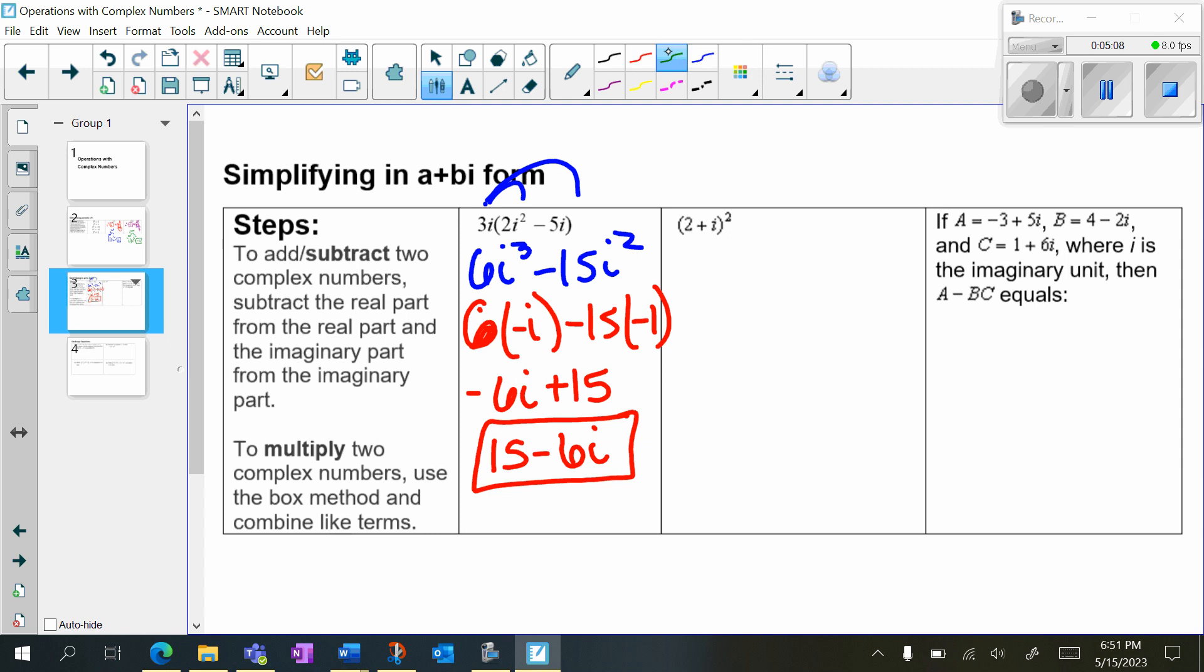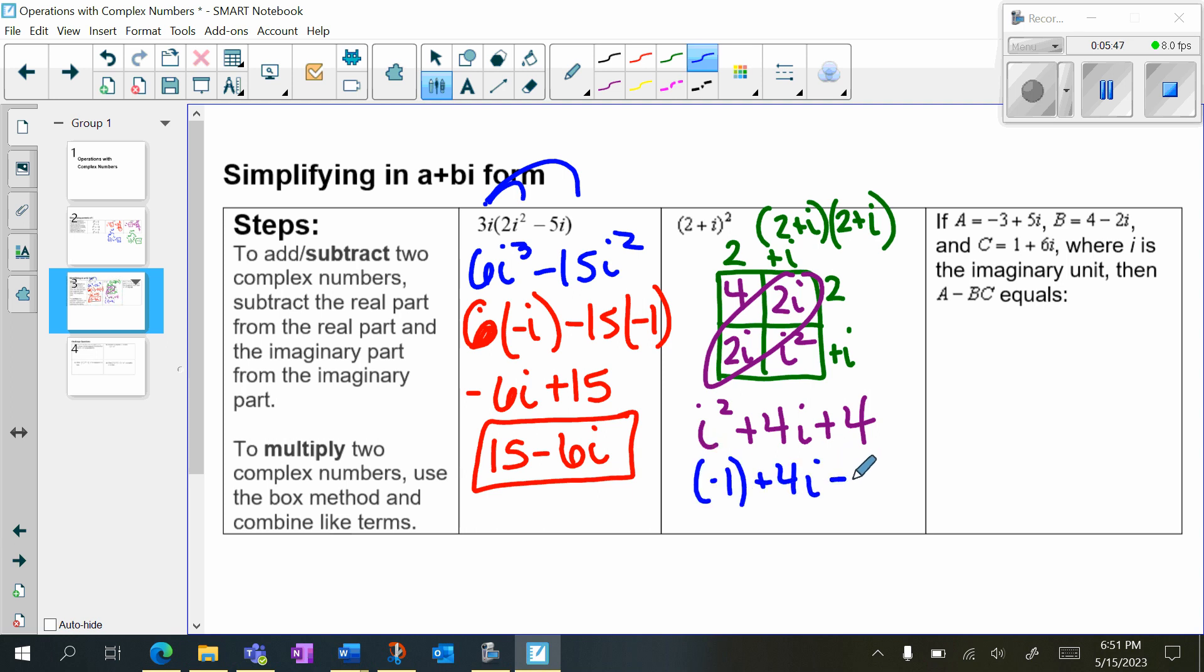And the next problem, we have 2 plus i squared. Now, notice this is really 2 plus i times 2 plus i. So here, we're going to do the box method. So we're going to draw a box. 2 plus i, 2 plus i. So 2 times 2 is 4. 2 times i is 2i. 2 times i is 2i. i times i is i squared. We're going to add our diagonal. So we're going to have i squared plus 4i plus 4. But remember, i squared is negative 1. Negative 1 plus 4i plus 4. We can combine negative 1 and 4 to be 4i plus 3. And again, a plus bi form, 3 plus 4i.